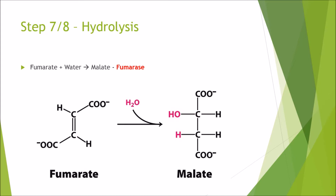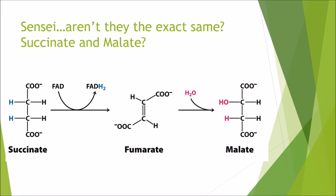Step 7 of 8 is hydrolysis. Fumarate is hydrolyzed with water to form malate, and that is catalyzed by the enzyme fumarase. We are just sticking on the water to break that double carbon bond. Succinate and malate are very similar but there is one tiny difference: the two hydrogens are given off to the carrier, and the water provides an OH group on the second carbon. That is the only difference between malate and succinate, but in biology you have to go through all these separate steps to achieve it.